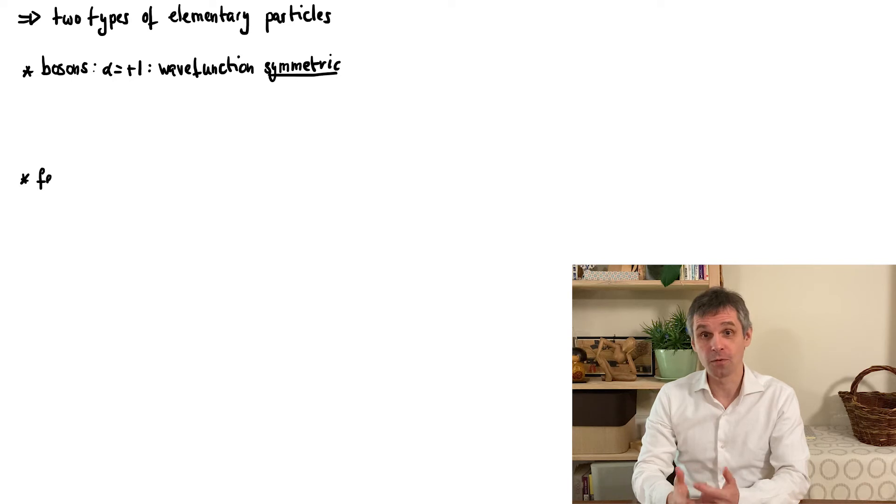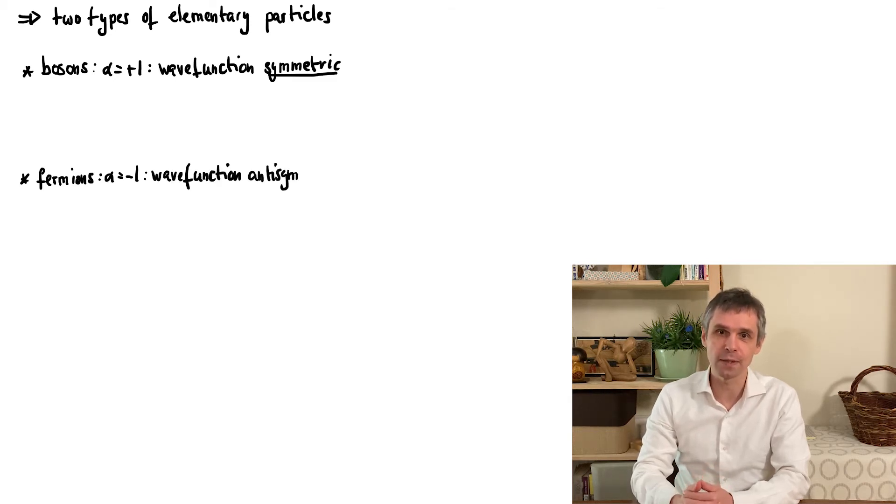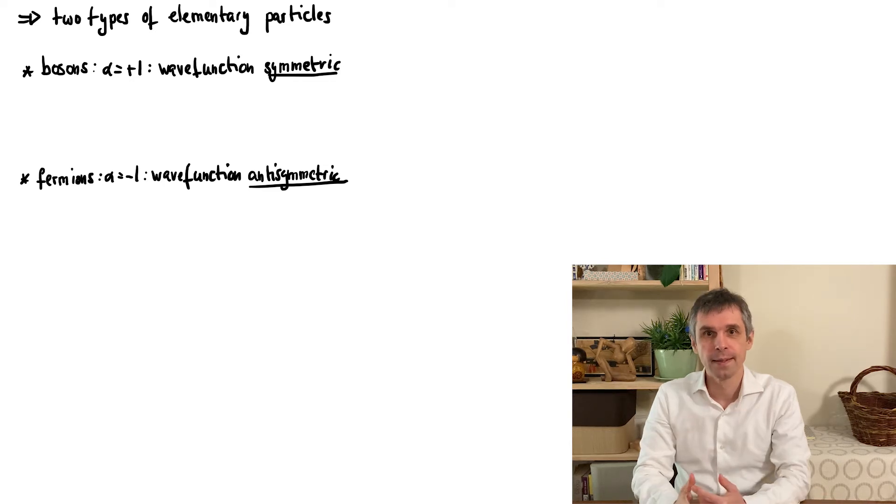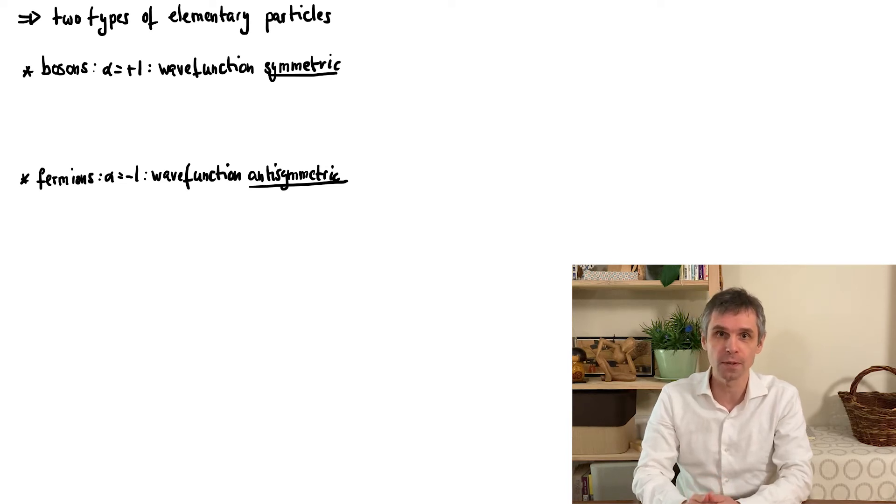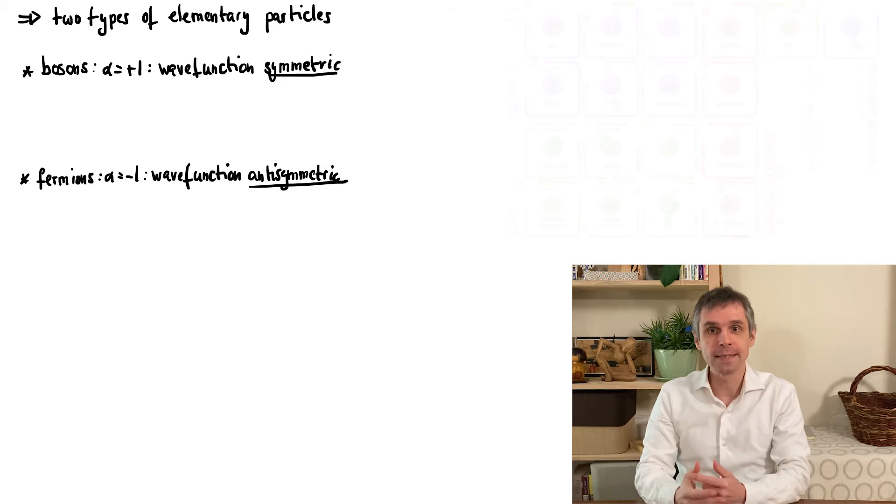The second type are called fermions, which are then the particles for which alpha equals minus 1. And this then means that the wavefunction is completely anti-symmetric when we interchange the labels of any two identical fermions. I emphasize here that the bosons or fermions really need to be identical for this constraint to apply, as we have several types of bosons and fermions.